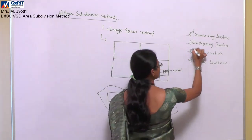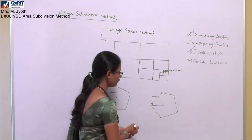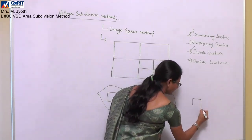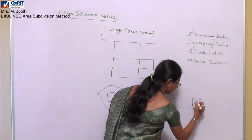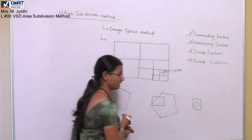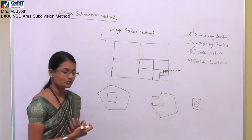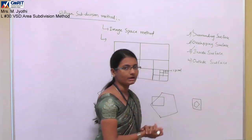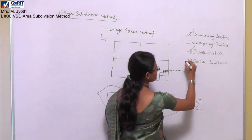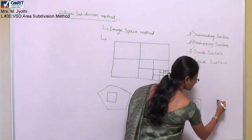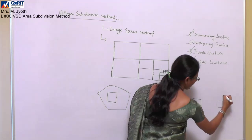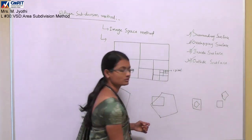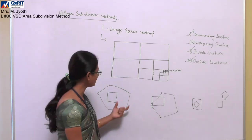The third type is inside surface, where the object is completely available within your area — the surface fits entirely inside after dividing. The fourth type is outside surface, where after dividing, the surface you are considering is completely outside of your area. These are the four cases.